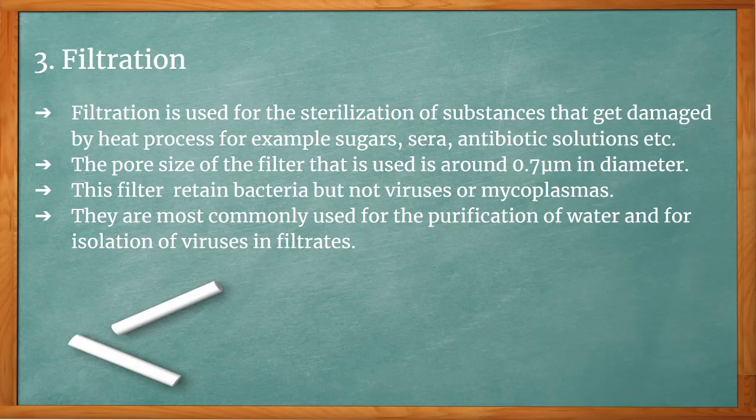The third method of sterilization is filtration. Filtration is used for the sterilization of substances that get damaged by heat, for example, sugars, sera, and antibiotic solutions. The pore size of the filter used is around 0.7 micrometers in diameter. This filter retains bacteria but not viruses or mycoplasmas, and is most commonly used for water purification and isolation of viruses in filtrates.